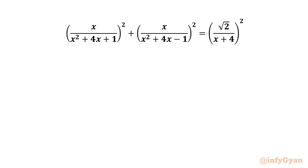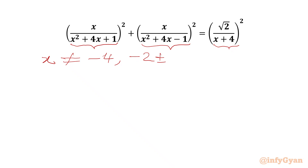Let us get started by writing our denominators cannot be 0. x² + 4x - 1 cannot be 0, and x + 4 cannot be 0. So we can write our restricted list: x cannot be -4 from the RHS denominator; x cannot be equal to -2 ± √3 from the first term denominator; and x cannot be -2 ± √5 from x² + 4x - 1 = 0. So these 5 solutions are exempted from our list.